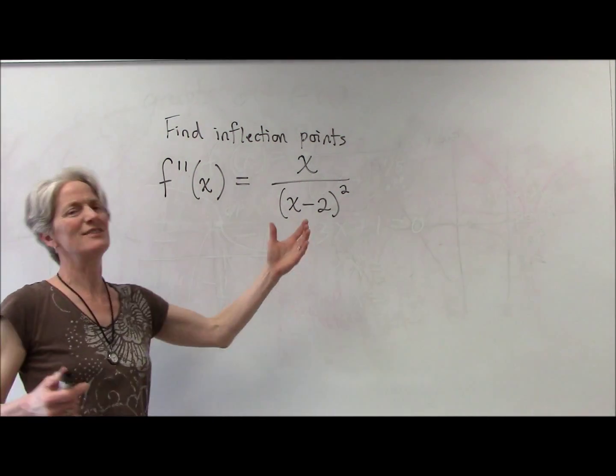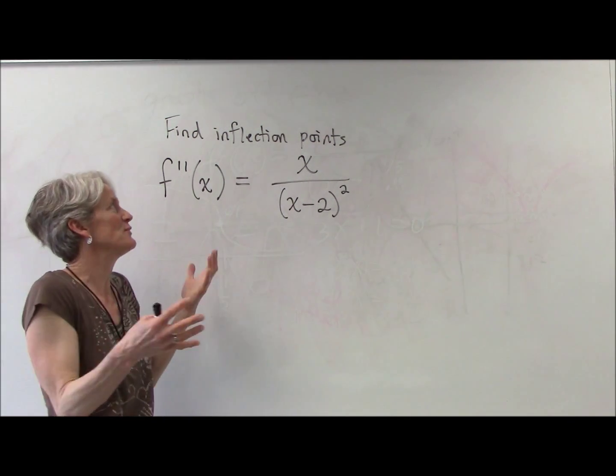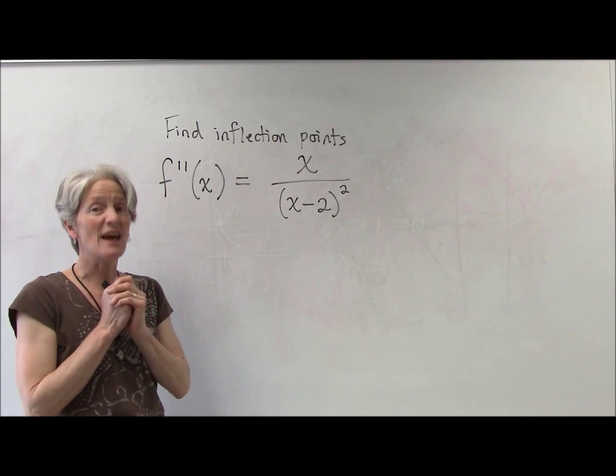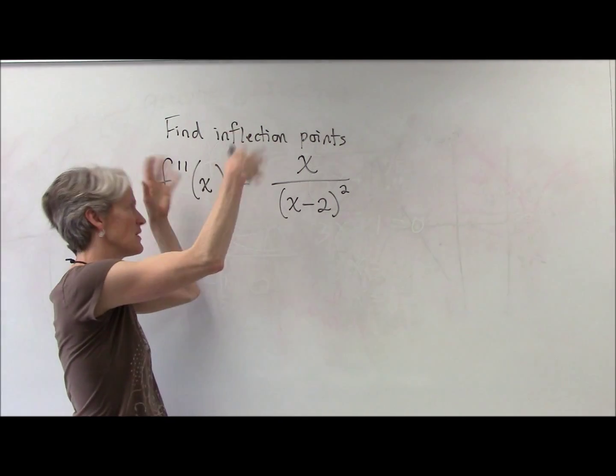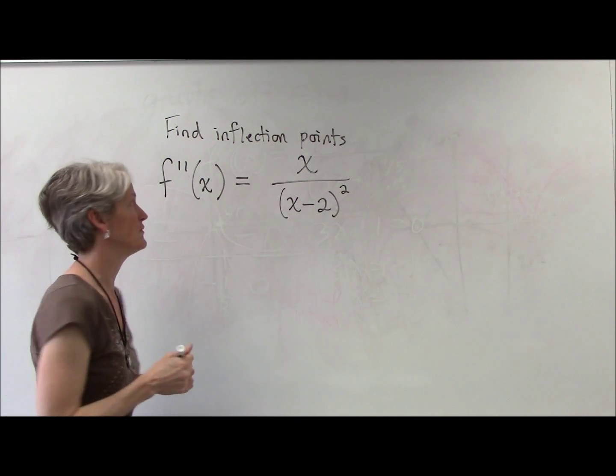So I already took the derivative for you twice. That is the second derivative. You don't have to take the derivative. You're just going to use the second derivative of some unknown function to find the inflection points of the original function.